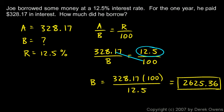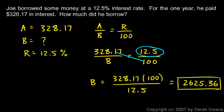So if he borrowed that much money at an interest rate of twelve and a half percent, then he's going to have to pay that much extra in interest if he borrows it for one year.